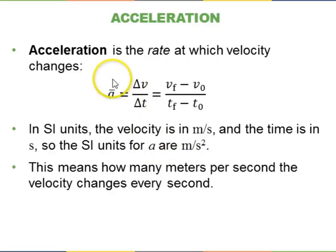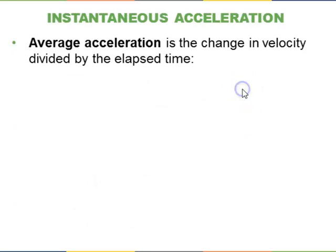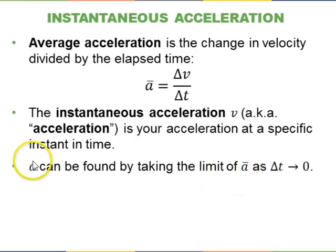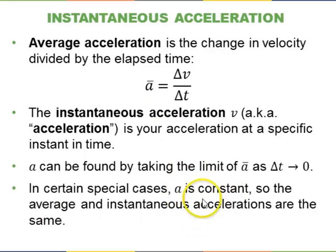Meters per second squared means how many meters per second the velocity changes per second. Acceleration is a vector, in the same direction as the delta-V vector. The instantaneous acceleration is your acceleration at any specific instant in time — found as the limit of average acceleration as delta-T goes to zero. In many cases in the first part of a physics course, acceleration is constant, so the average and instantaneous accelerations are the same.